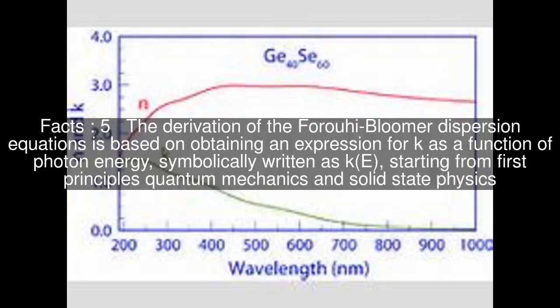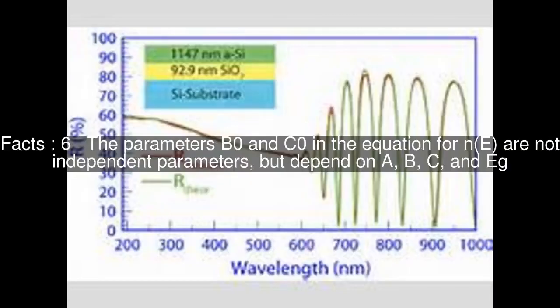The derivation of the Forouhi-Bloomer dispersion equations is based on obtaining an expression for k as a function of photon energy, symbolically written as k(E), starting from first principles quantum mechanics and solid-state physics. The parameters B0 and C0 in the equation for n(E) are not independent parameters, but depend on A, B, C, and Eg.